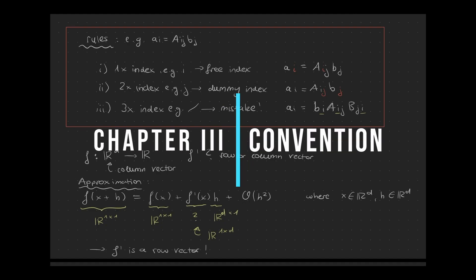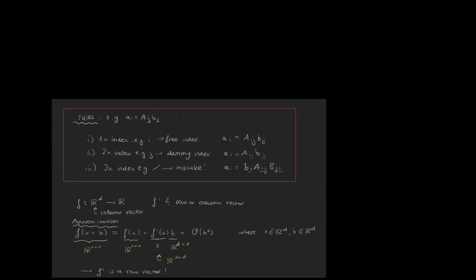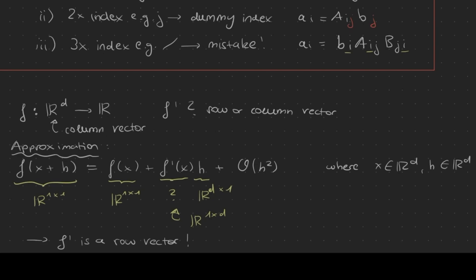There is one additional thing to clarify before we dive into calculations. When you have a real-valued function f that takes a d-dimensional vector as input, is the derivative of f then a column vector or a row vector? We can answer this by looking at the Taylor expansion around x plus h. We get f(x+h) = f(x) plus the first derivative of f times h plus higher-order terms. Since f is a scalar value, the right-hand side must also be a scalar. f(x) is a scalar and h is a column vector, so the first derivative has to be a row vector in order to yield a scalar in that second term. So the first derivative is indeed a row vector.